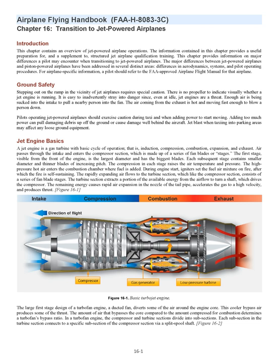Chapter 16: Transition to Jet-Powered Airplanes. This chapter contains an overview of jet-powered airplane operations. The information provides a useful preparation for, and a supplement to, structured jet airplane qualification training. It provides information on major differences a pilot may encounter when transitioning to jet-powered airplanes, addressed in several distinct areas: differences in aerodynamics, systems, and pilot operating procedures. For airplane-specific information, a pilot should refer to the FAA-approved airplane flight manual.